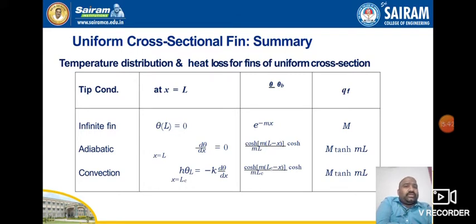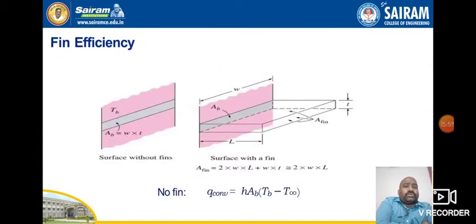For the infinite fin case at X = L, θ(L) = 0, so θ/θB = e^(−mX). The fin heat transfer rate QF = M·θB. These represent the different temperature distributions and heat loss expressions for fins of uniform cross-section.